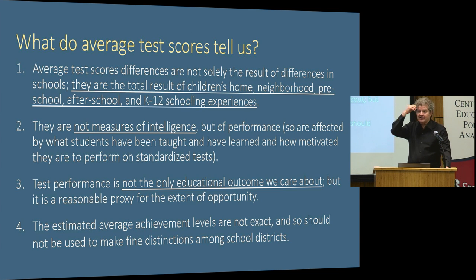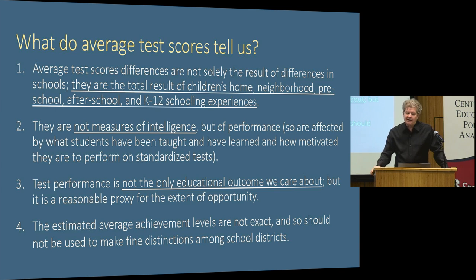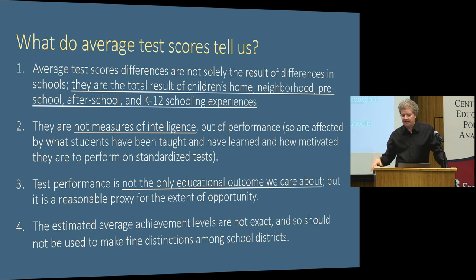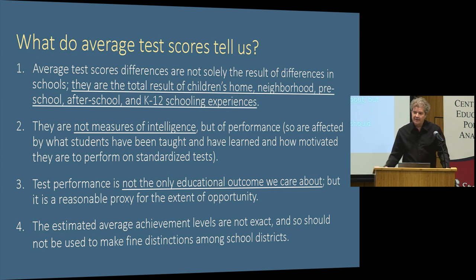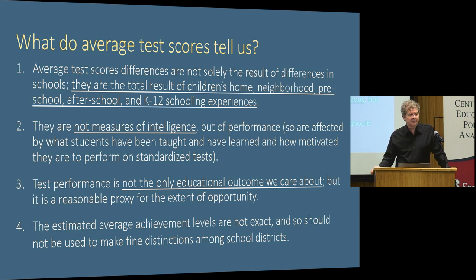Before I show you the data, let me prime you to think about how to interpret it. Average test scores and differences in average test scores should be thought of not as solely the result of experiences kids have in school, but as the total result of all kids' experiences from the time they're born — or even conception — until the time they take the test. They're the result of things that happen at home, in preschool, in the neighborhood, in after-school programs, and in K-12. So these aren't measures of the quality of K-12 schools; they are measures of the sum total of opportunities that kids have to learn by the time they get to eighth grade.